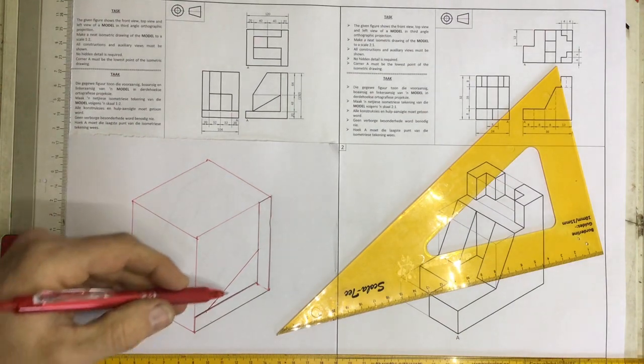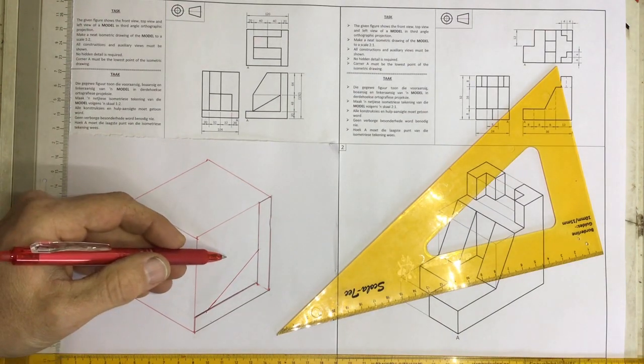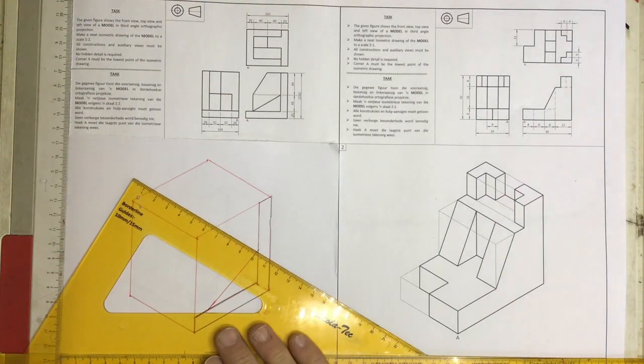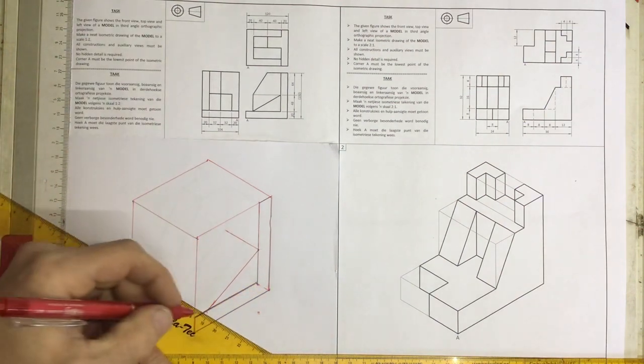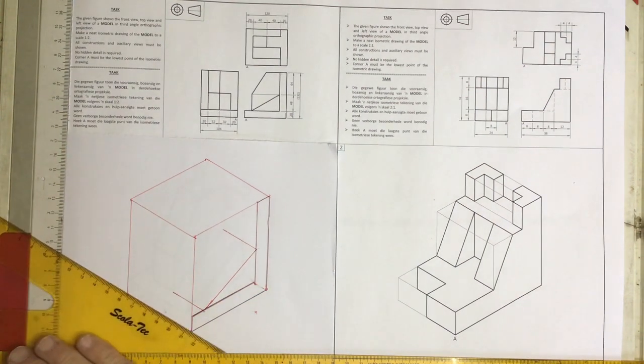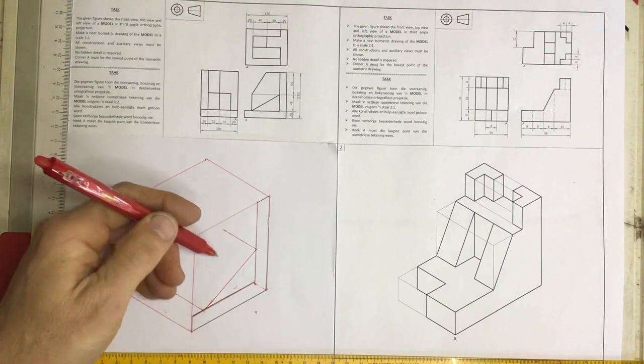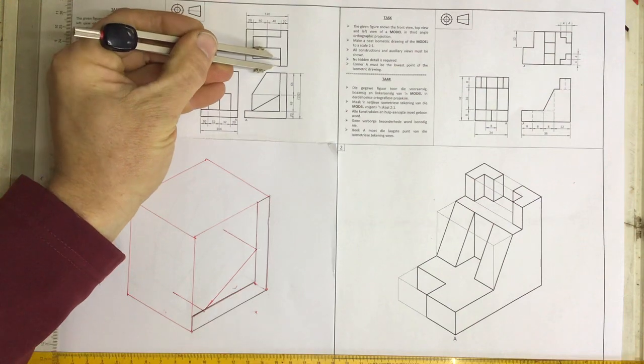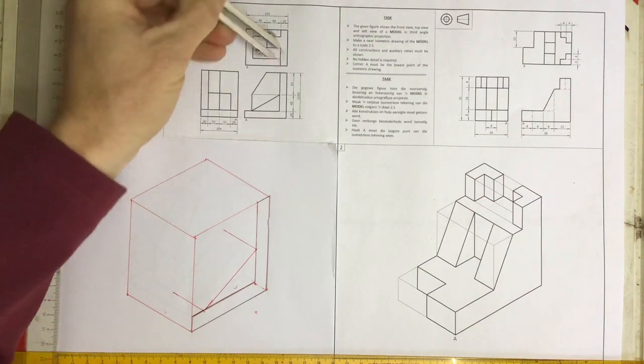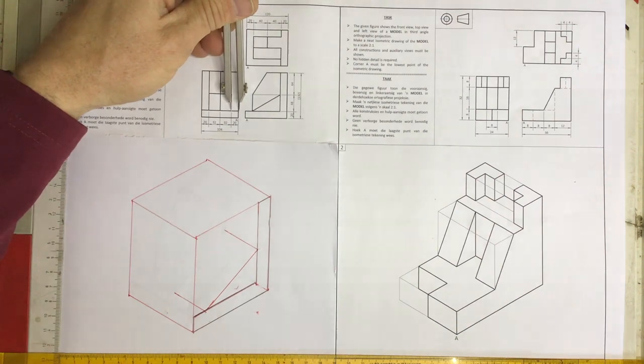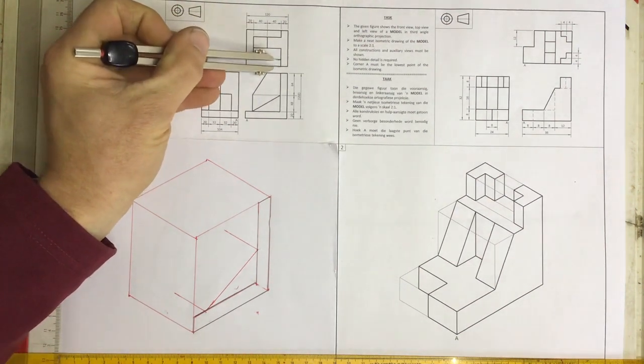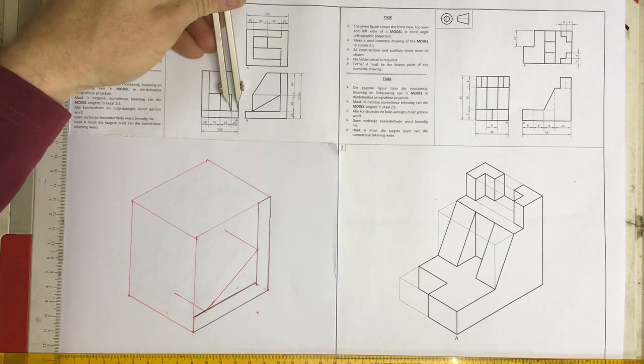There's my slope as a construction line, but I need to move it back. How far back? I need to move it back this distance from my top view. They don't show it on the top view, but I can find it on the left view. Take it across, drop it down.